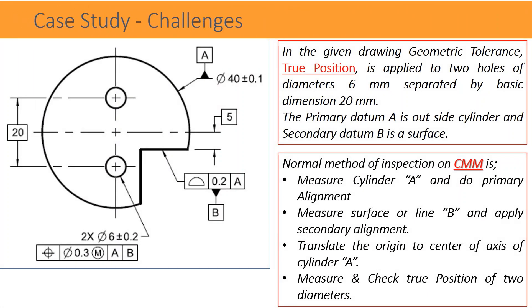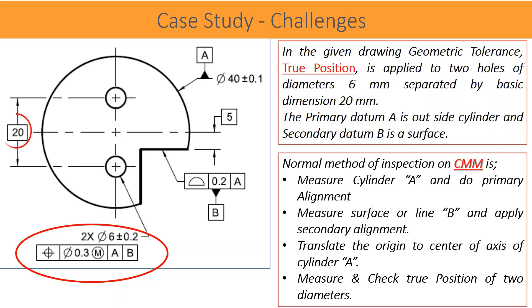In the given drawing, geometric tolerance true position is applied to two holes of diameter 6 mm, separated by basic dimension 20 mm. The primary datum is outside cylinder A and secondary datum B is a surface. The normal method of inspection on CMM is: measure cylinder A and do primary alignment, measure surface or line B and apply secondary alignment, translate origin to center of axis of cylinder A, measure and check true position of two diameters.